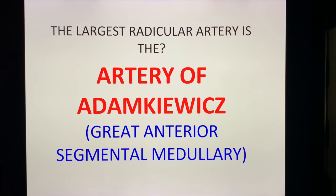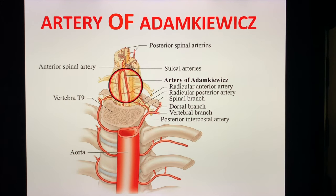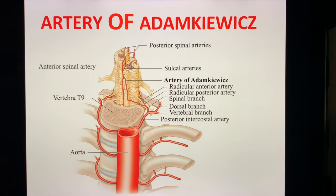The largest radicular artery is the famous artery of Adamkiewicz, also known as the greater or great anterior segmental artery. Why is the artery of Adamkiewicz something you have to bring with you to the boards? Because the artery of Adamkiewicz reinforces both the anterior and the posterior spinal cord. Just as God is wise — for organs very sensitive to disruptions of blood flow, he puts collateral circulations there. If the brain has the circle of Willis, the spinal cord has the artery of Adamkiewicz.